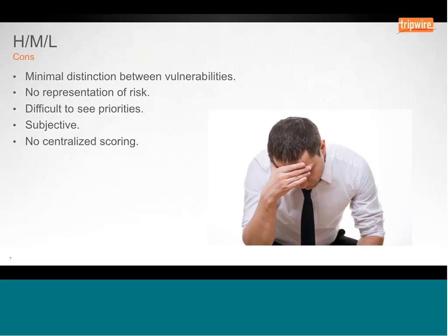There's no real representation of risk with HML — a vulnerability that's in the high bucket might actually be low risk, but might be there for other subjective reasons. And there's no centralized scoring. While a specific vendor that uses HML may have their own method of determining it, across vendors and across the industry you're not going to see a consistent 'this is high, this is medium, and this is low' structure. It's definitely a source of frustration when you can't prioritize vulnerabilities that way.